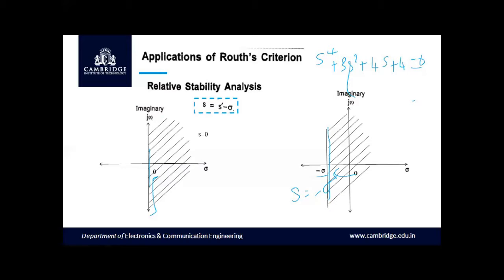To find the relative stability of a system about the line s = -sigma, we must shift the axis of the s-plane at the origin towards s = -sigma, then apply the Routh array by substituting s + sigma = 0. Hence we let s + sigma = s', so s = s' - sigma. This represents a shift to a new variable s'.